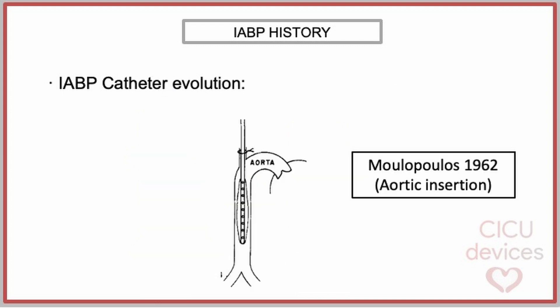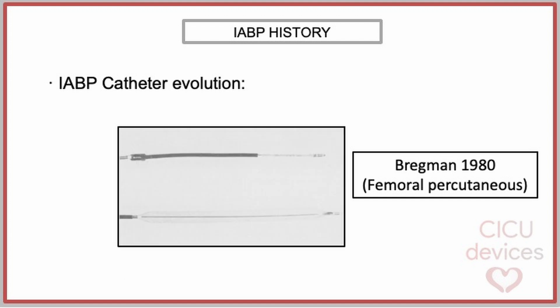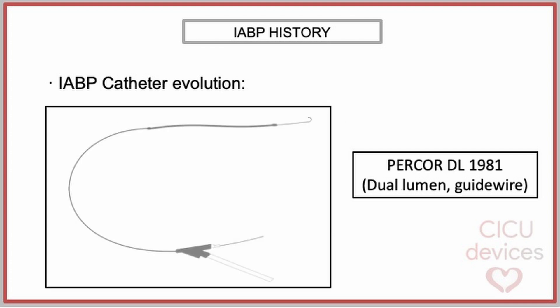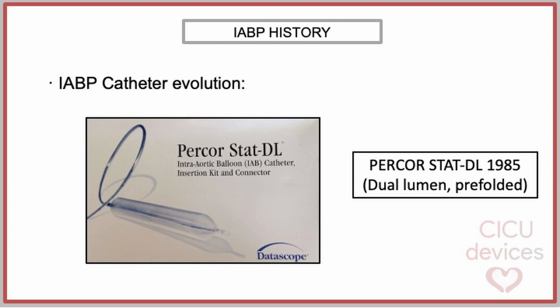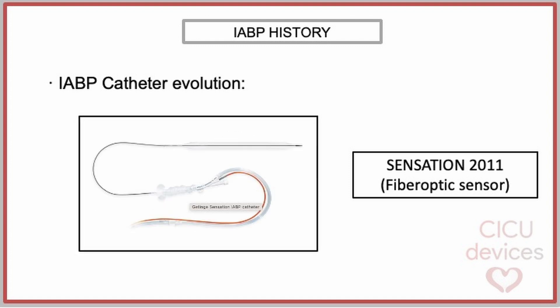Over time, there have also been significant technical improvements in the design of counterpulsation catheters. The first catheter was inserted directly into the thoracic aorta, while the initial catheters for clinical use were inserted via femoral arteriotomy with a diameter of 15 French. The next step was a catheter implanted through a 12 French sheath. The Percor-DL catheter, in 1981, added a second lumen to insert a guide wire and monitor aortic pressure. Later, a pre-folded catheter was commercialized, gradually reducing in size to minimize arterial damage. Currently, the intra-aortic balloon pump catheter incorporates a fiber-optic system aimed at reducing size and improving synchronization with the cardiac cycle.